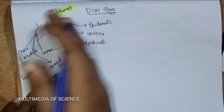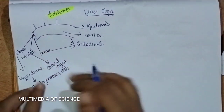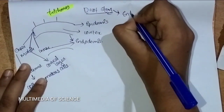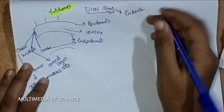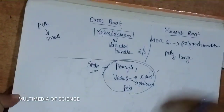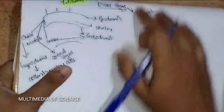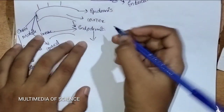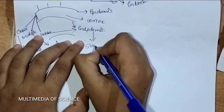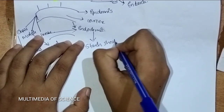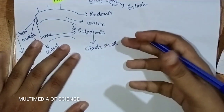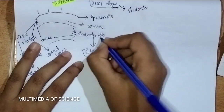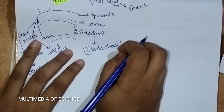In stem, Endarch is present, as we mentioned in the previous section. The another name for endodermis is starch sheath. Why? Because it is much rich in starch grains. That is why we call this endodermis as starch sheath.